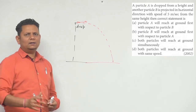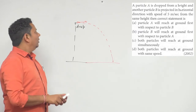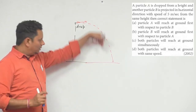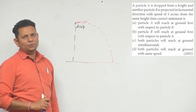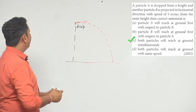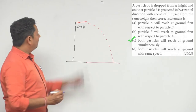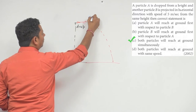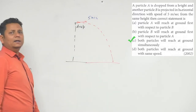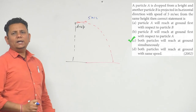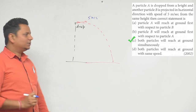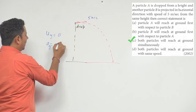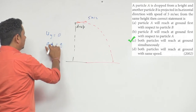This is a very simple question. The concept is that both particles reach the ground at the same time, and both will have the same speed in the vertical direction. If we look at particle B, its horizontal velocity is 5 meter per second, but its vertical velocity is 0. So when both particles start moving, the initial velocity u in the y-direction is 0 for both, and the acceleration in the y-direction is -g for both.